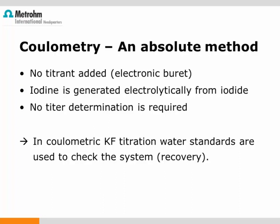Unlike the volumetric technique, there is no titer determination necessary for coulometric Karl Fischer titration — the coulometric technique is an absolute method. The instrument measures the time and current flow required to reach the titration endpoint, and the product of time and current is proportional to the iodine generated, which in turn is proportional to the amount of water determined. We still use water standards as in volumetry, but for regular system checks — by adding a known amount of water and calculating the recovery, it can be confirmed that the instrument is giving correct results.